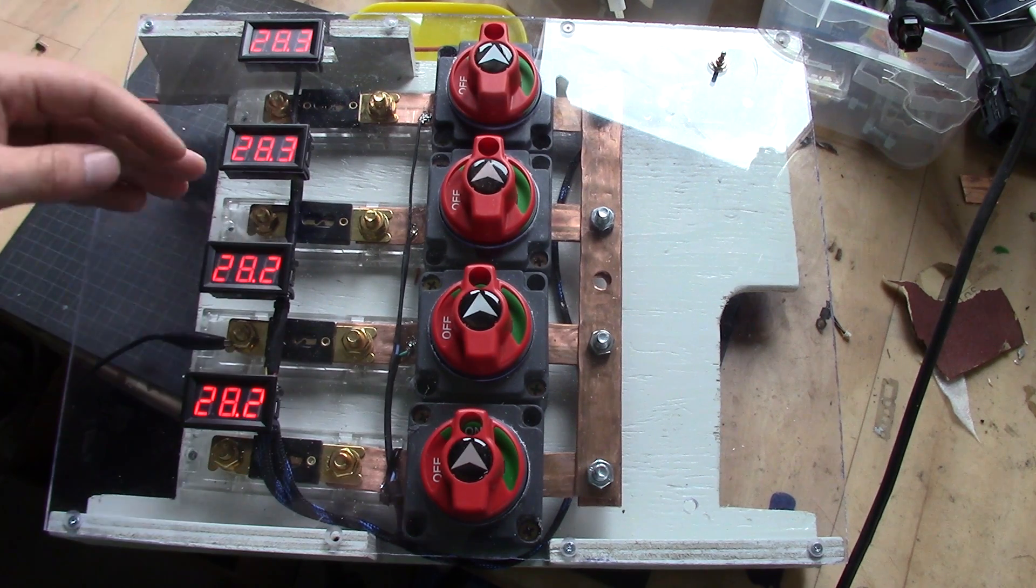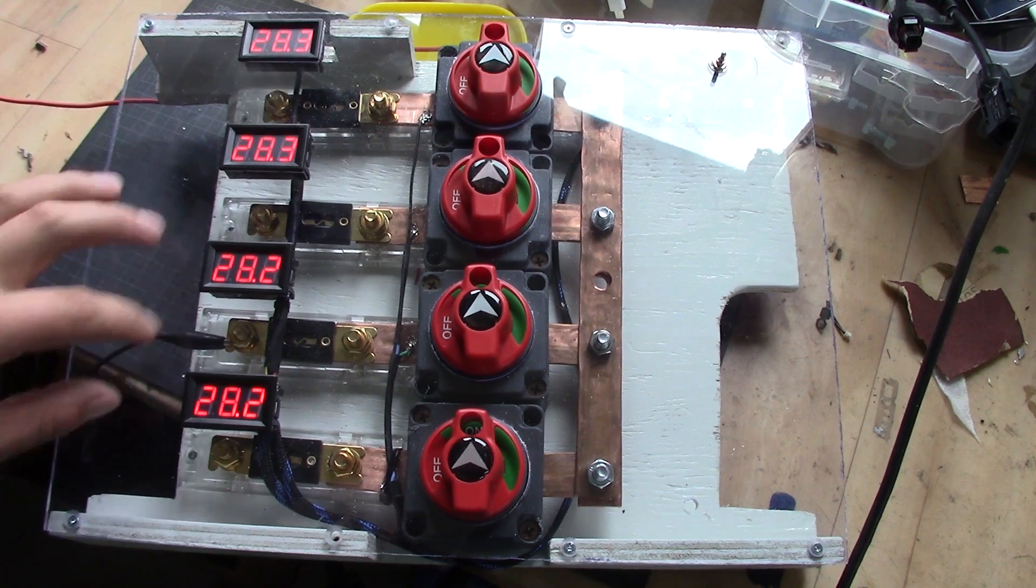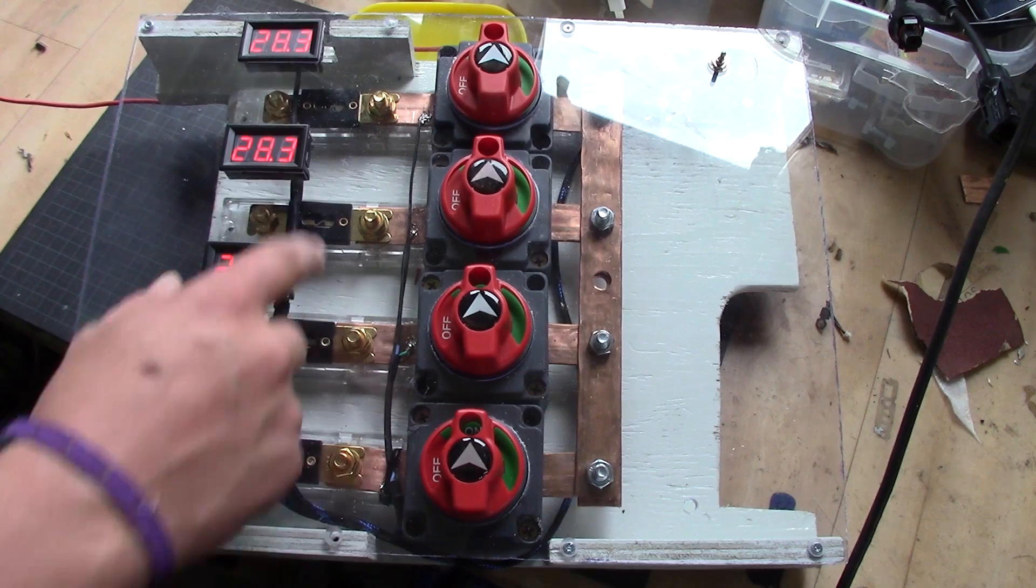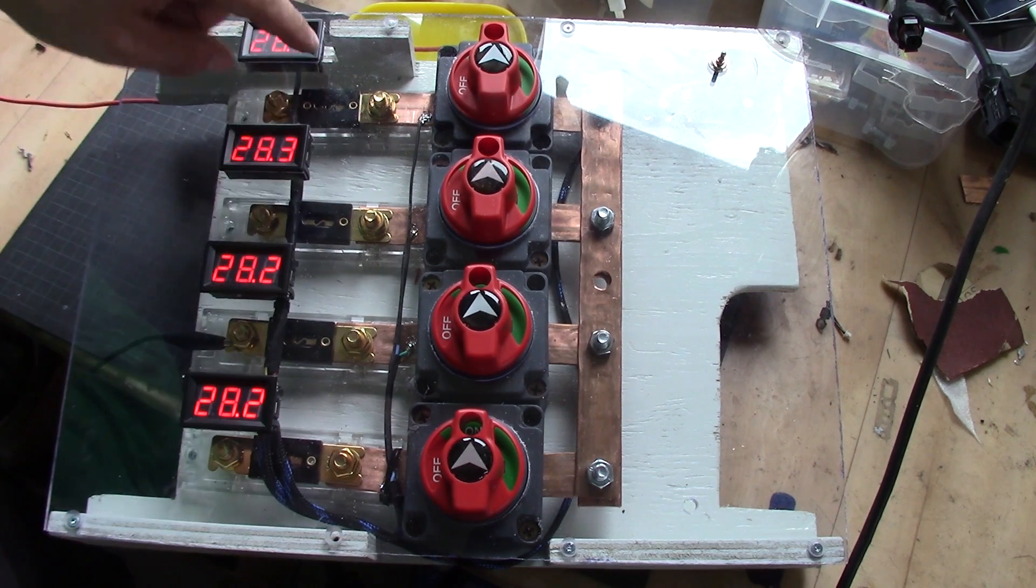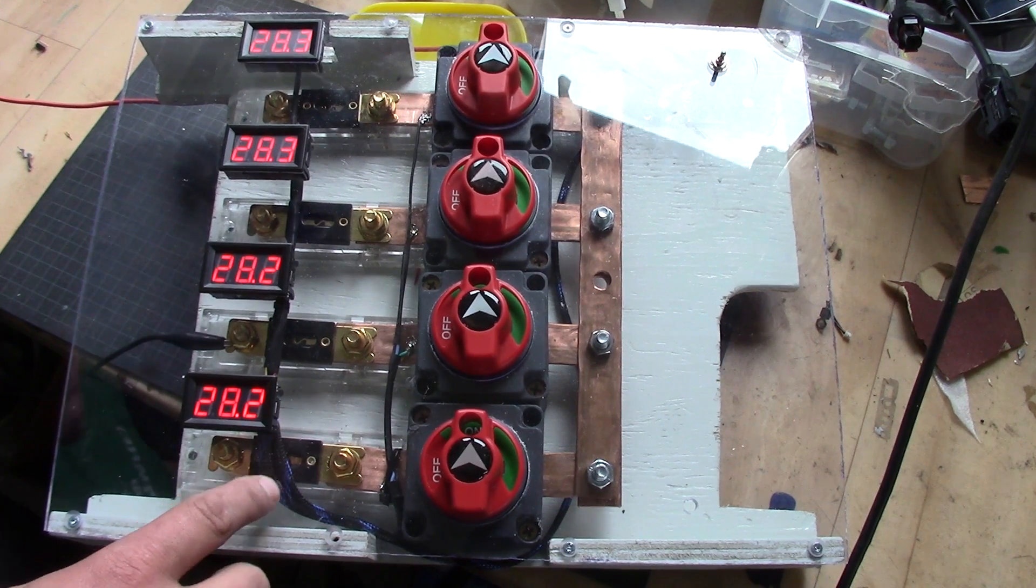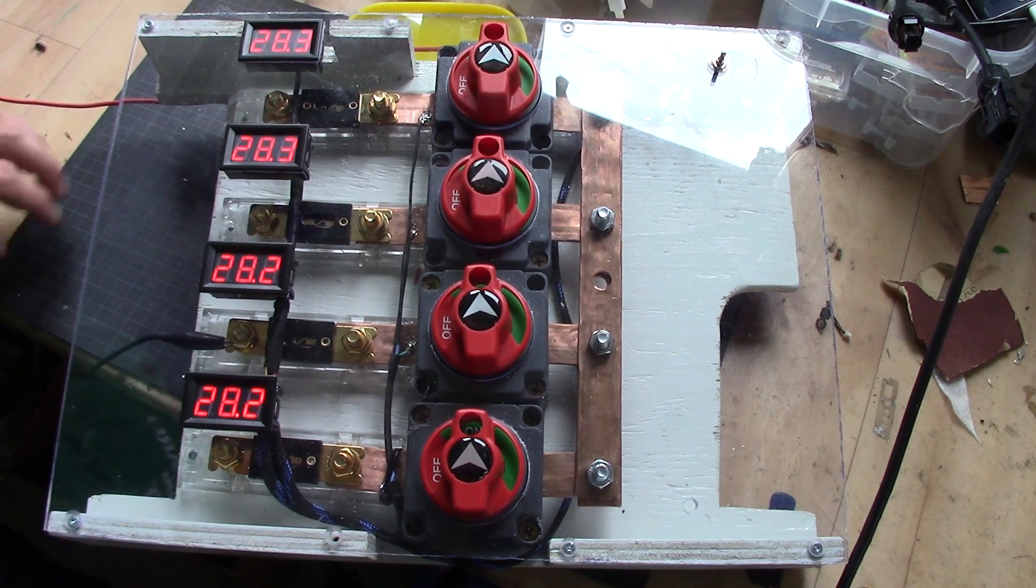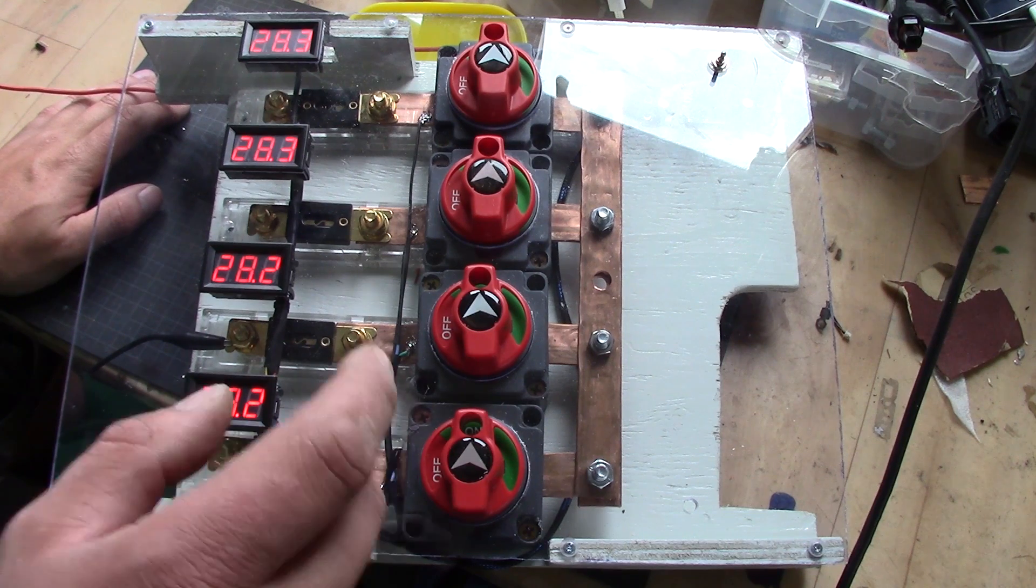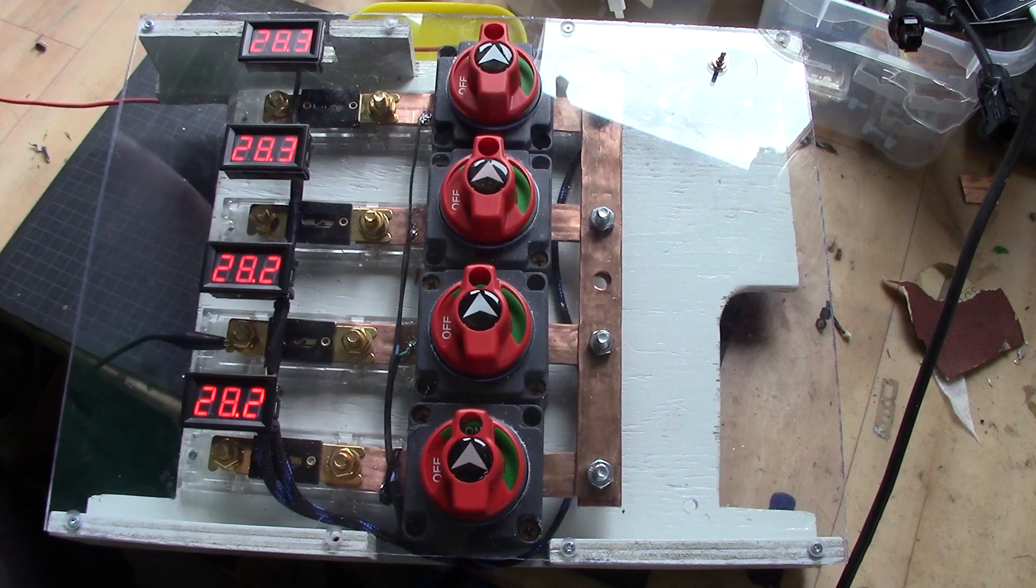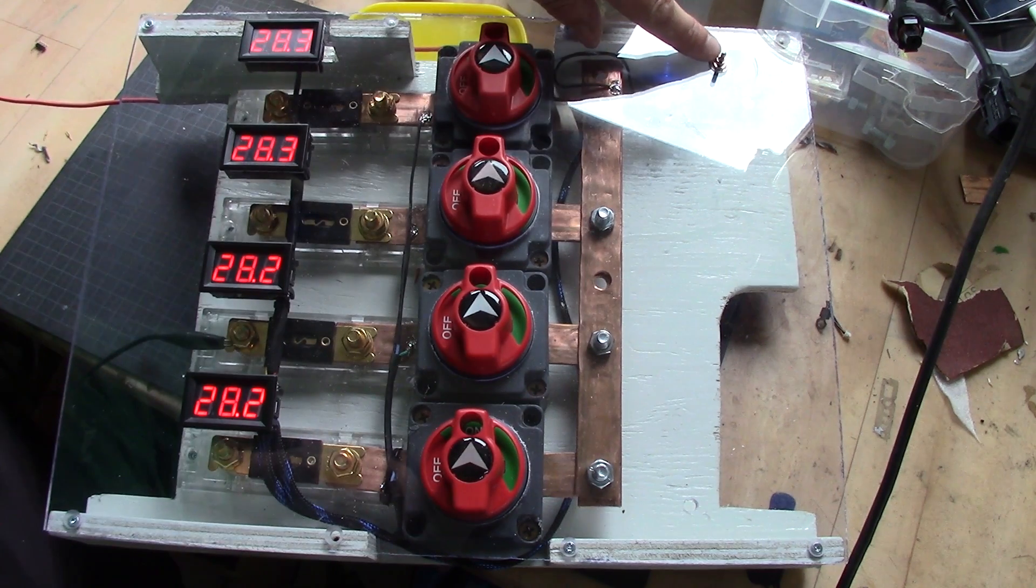So basically how is this functioning then? Here I will have the four battery banks one, two, three, and four. I have fuses 100 amp each. It's quite clearly visible from this side to see how it is going. And we have four main switches here.